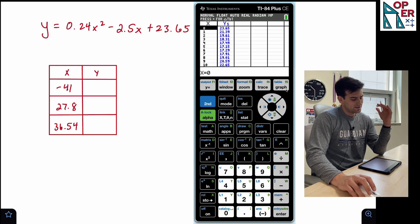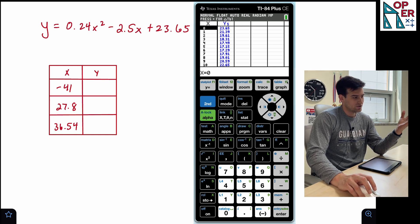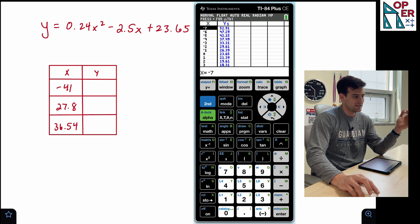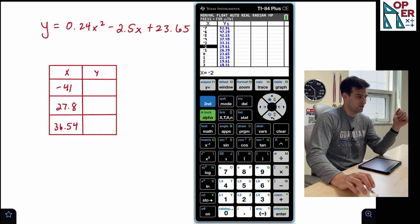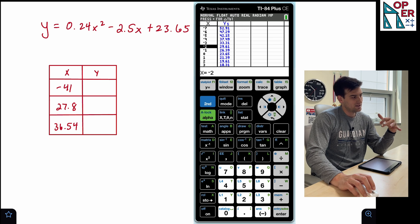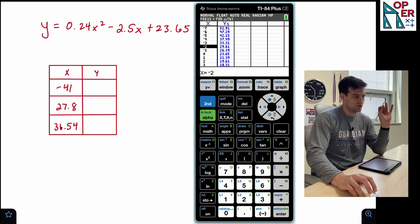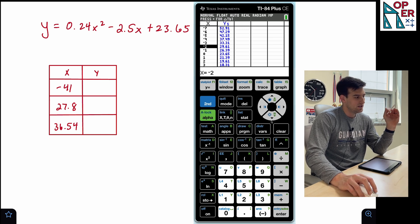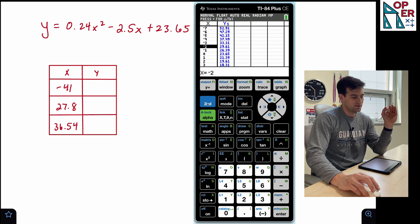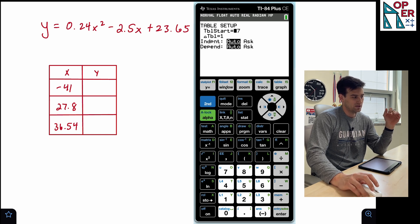So now to find when x is negative 41, I could just click up 40 times to see when it's gonna be negative 41, but that's gonna take a while. And like I said in that previous video, I told you how to start your table at a different value. And so we're gonna go to that same button today, that second window.